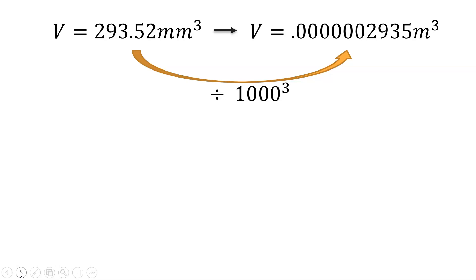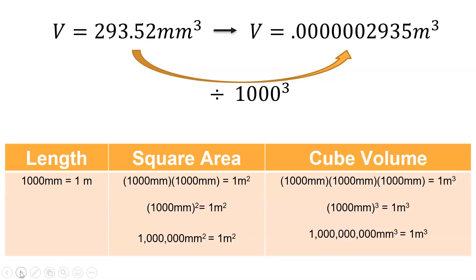Let's look a little closer at why this happens. If the length conversion is 1000 millimeters equals 1 meter, then the area conversion is 1000 to the second power and the volume is 1000 to the third power.